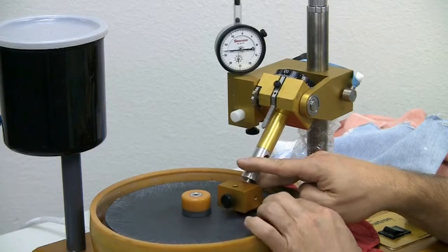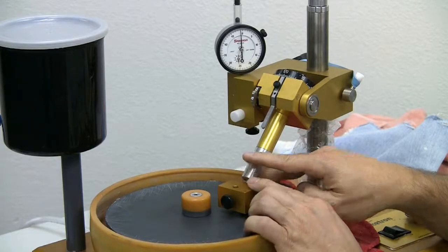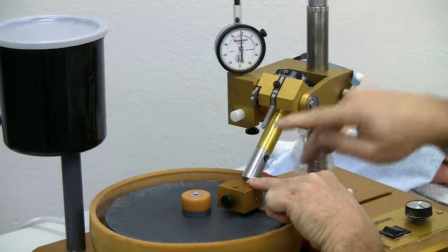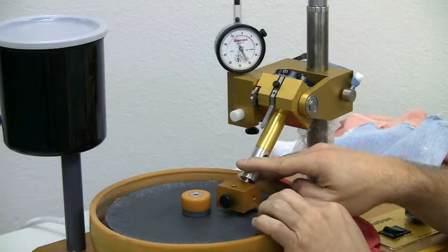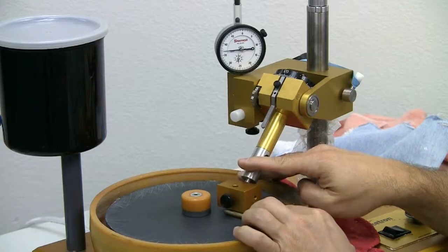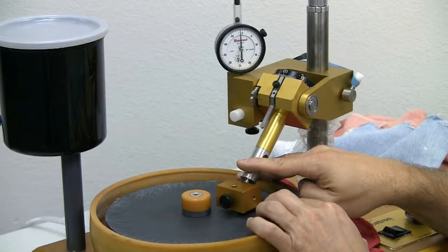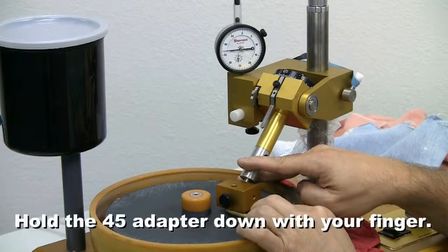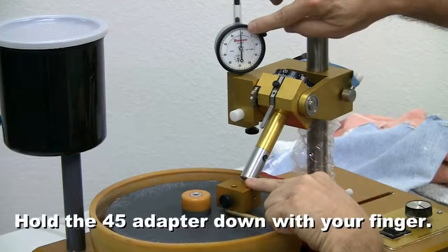Once you've found the position with a micrometer height adjustment, so that both the front and the back of the Precision 45 adapter meet exactly the same spot on the dial indicator.